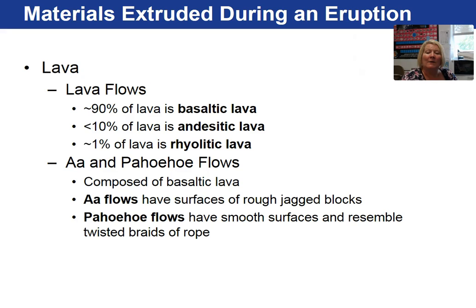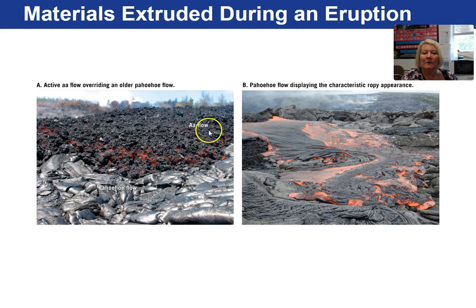In looking at basaltic lava flows, there are two types: aa and pahoehoe. The difference between an aa and pahoehoe flow is essentially their texture. Aa flows have very rough, jagged blocks, whereas pahoehoe flows tend to have a smoother surface resembling a twisted braid. Here is the aa flow, here is pahoehoe, exhibiting its ropey appearance.